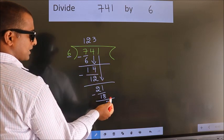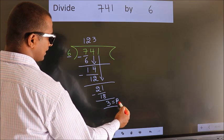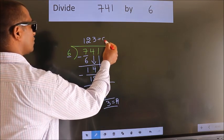No more numbers to bring down. So, we stop here. This is our remainder. This is our quotient.